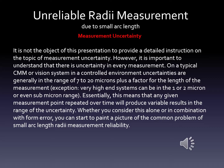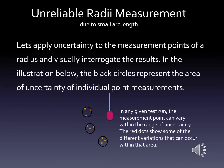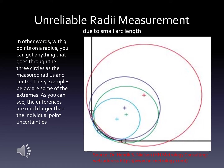Whether you consider this alone or in combination with form error, you can start to paint a picture of the common problem of small arc length radii measurement reliability. In the illustration, the black circles represent the area of uncertainty of individual point measurements. That means for any given test run, the measurement point can vary within the range of uncertainty — the red dot shows some of the different variations that can occur within that area. With three points on a radius, you can get anything that goes through the three circles as the measured radius and therefore the measured center. The four examples shown are some of the extremes, and the differences are much larger or more exaggerated than the individual point uncertainties.